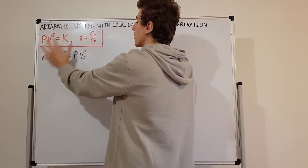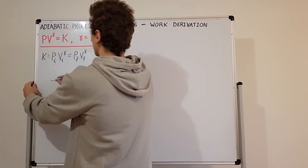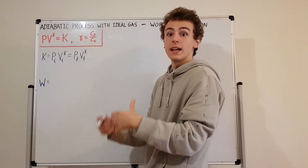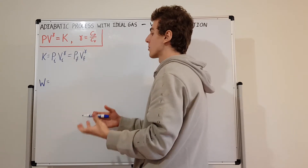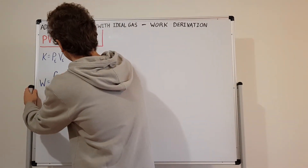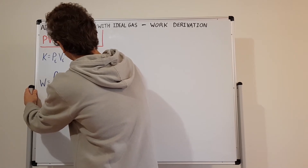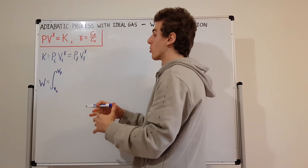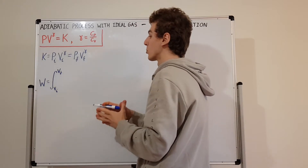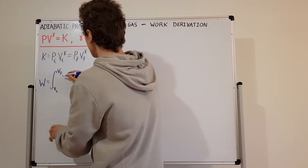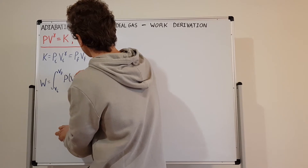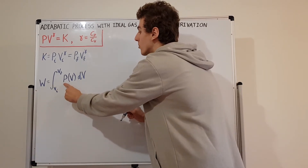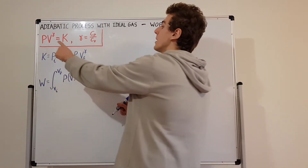We're going to keep this and use it later in the proof. Now let's write the work. The work is the area under the curve, which is given by integration. We take the integral from the initial volume to the final volume — this is compression or expansion work — of the pressure as a function of volume dV. But to evaluate this integral, we need an expression for the pressure.